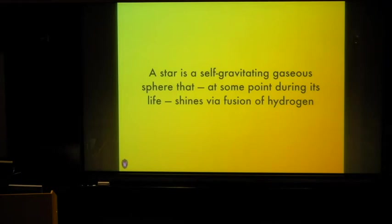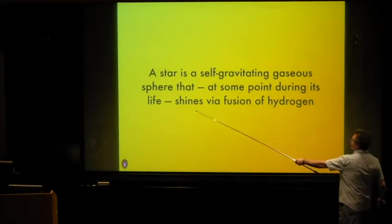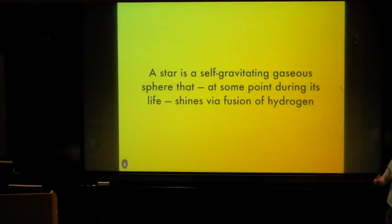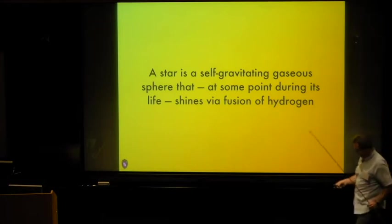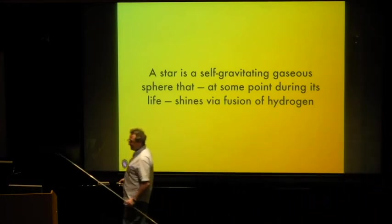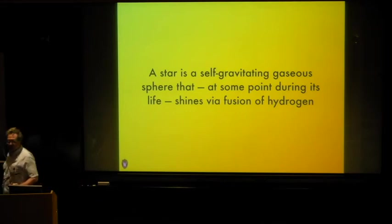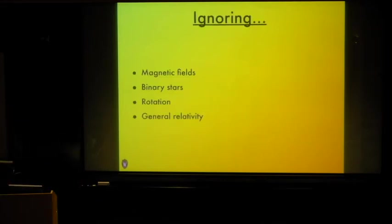Just from looking at this definition, we know we're talking about a singular object. To model it, we're going to have to worry about gravity, the transport of energy by radiation and perhaps other mechanisms because stars shine — energy is moving from the core up to the surface. We're going to have to think about nuclear reactions, and about how the star changes over time. That sets the stage for how we're going to think about stars.